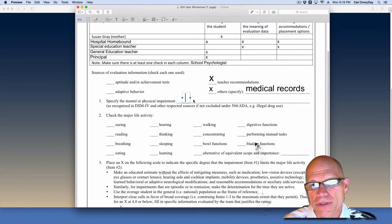We're going to specify the type of impairment. In this case, we'll just write that it was a broken wrist.